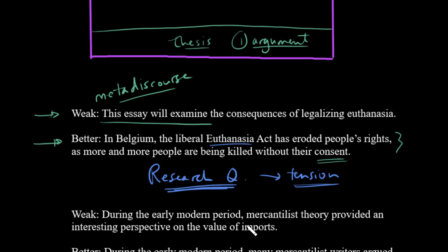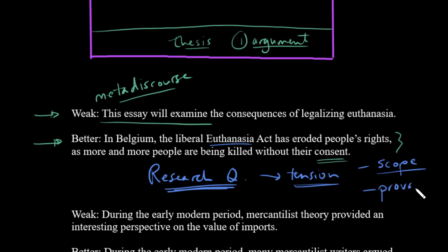Another thing to think about is the scope of your thesis. If your thesis is too broad or too big, it may not be something you can actually prove in a few pages. A thesis has to be provable. You can make really large claims, but if you can't provide evidence and actually prove it, that presents problems.